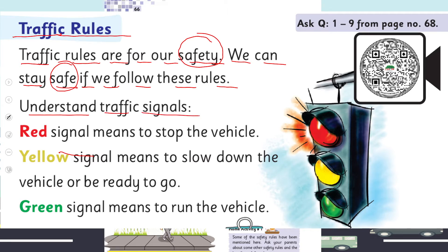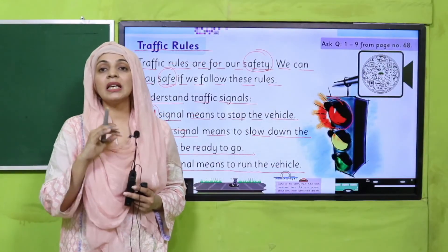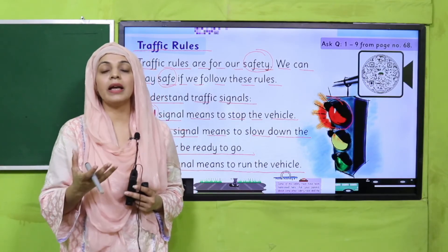Understanding traffic signals: Red signal means to stop the vehicle. Yellow signal means to slow down the vehicle or to be ready to go — yellow means ready to go or slow down. Green signal means to go — now you can go. These are the meanings of different traffic signals, which I have explained here.